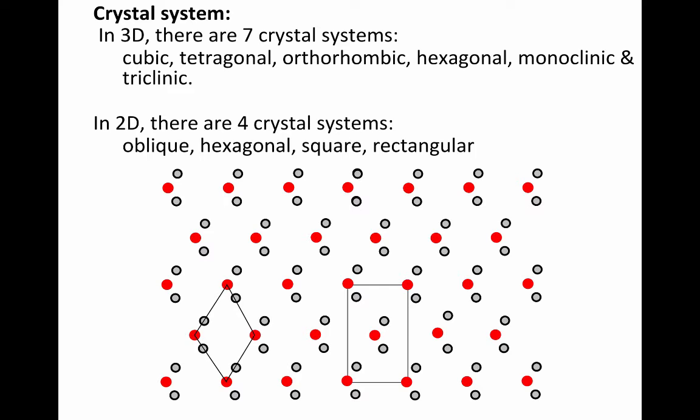In 3D, there's seven crystal systems: cubic, tetragonal, orthorhombic, hexagonal, monoclinic, and triclinic.